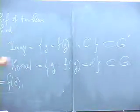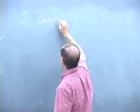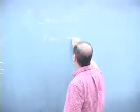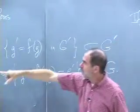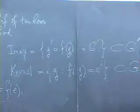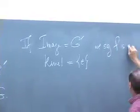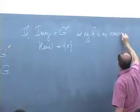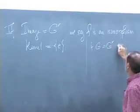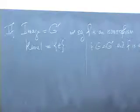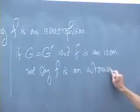If the image is equal to G prime and the kernel is equal to the set {e} — which is always in the kernel, and the image always contains e prime by the fact that f of e is e prime, and the kernel always contains e — so if the image is G prime and the kernel is {e}, we say f is an isomorphism. And if beyond being an isomorphism, G is equal to G prime and f is an isomorphism, we say f is an automorphism: an isomorphism from G to itself.